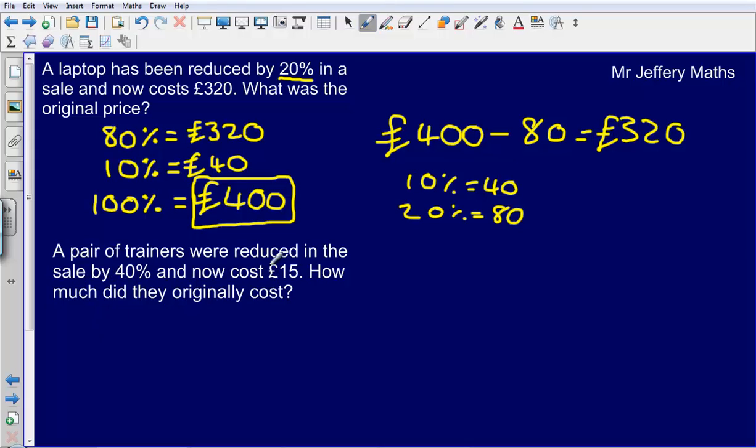So if it has been reduced by 40% what I could say is that it is 60% of the original. So it is 60% of the original and that is equal to £15. So 40% has been taken off and that is £15.